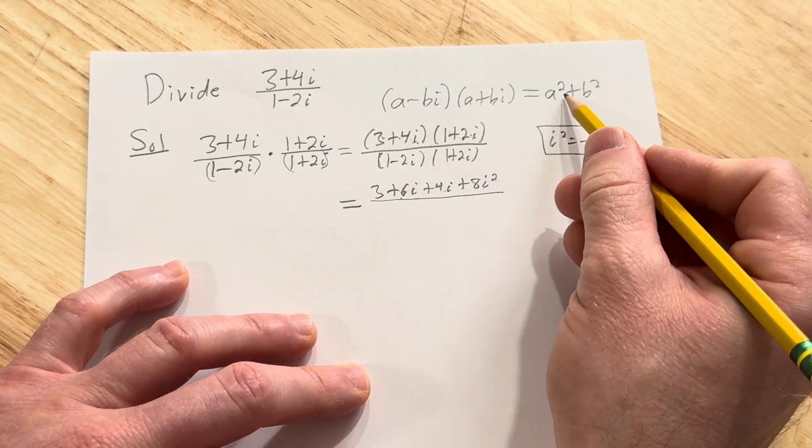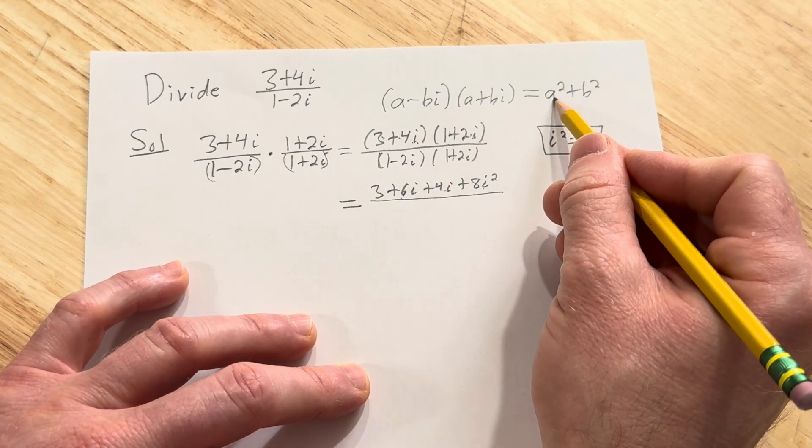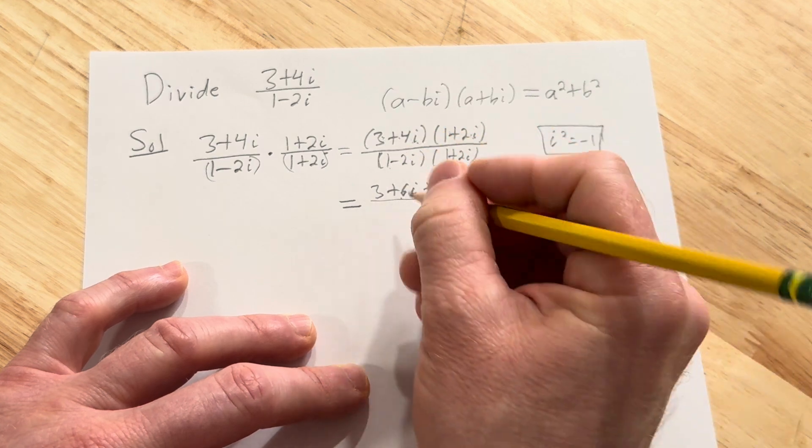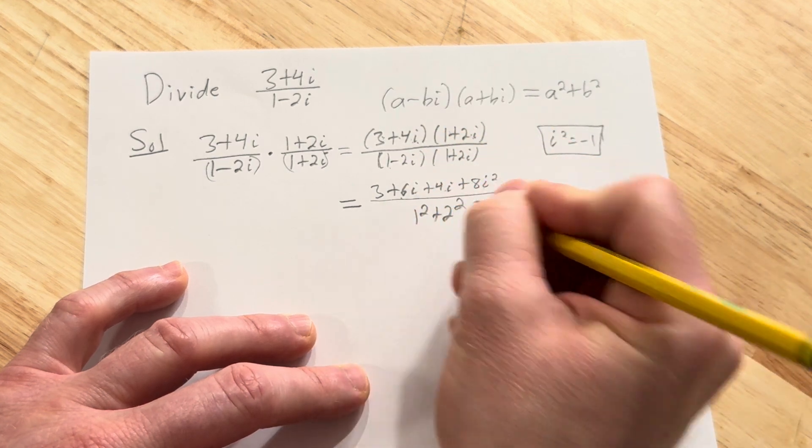Over... In the denominator we can apply this super powerful formula. So a is 1 and b is 2. So it's going to be 1 squared plus 2 squared. Boom.